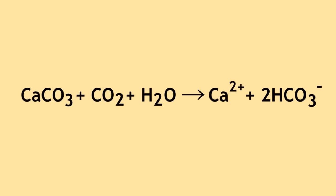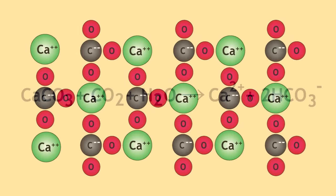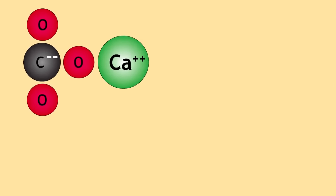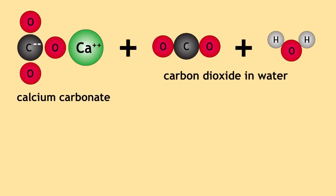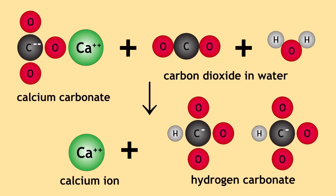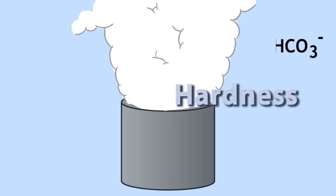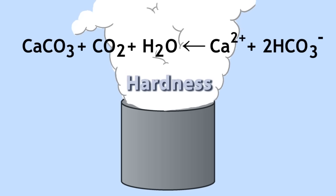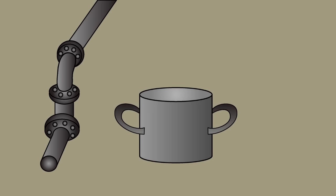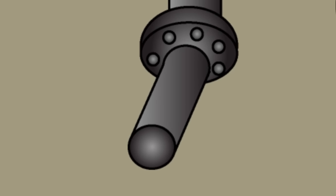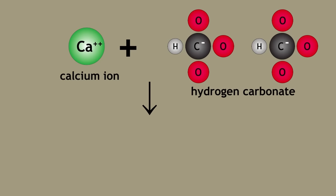Here is the equation: calcium carbonate reacts with the carbon dioxide in the rain to form soluble calcium hydrogen carbonate. This form of hardness is called temporary hardness, because boiling reverses the reaction and the hardness is removed. But the limestone will deposit in your pipes, on cooking utensils, or in your kettle, forming lime scale — and this is also how stalactites are formed in those big caves.